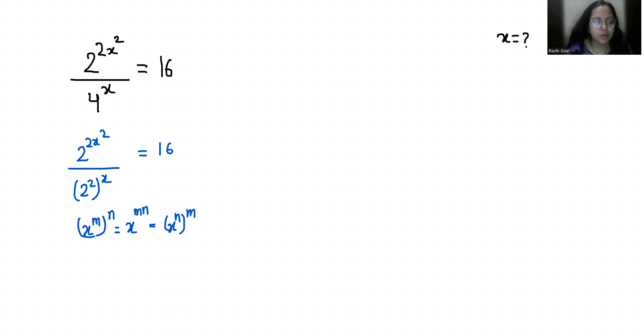So it becomes 2 power 2x square by 2 power 2x equals 16 as 2 power 4. Another exponent rule: x power m by x power n, we can write it as x power m minus n. So 2 power 2x square minus 2x equals 2 power 4.